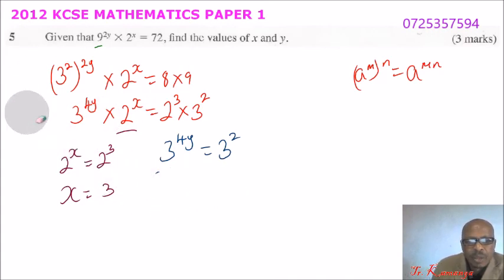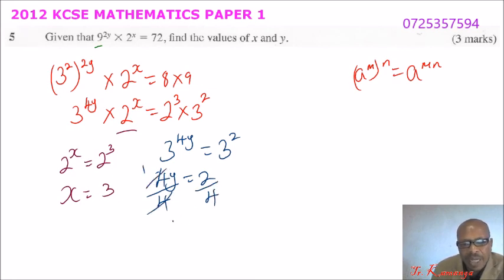Instead of dividing by 2, we divide by 4. So we say 4y equals 2. You divide by 4 here. You divide by 4 here. So that we are left with the y on one side. So that's 1. Y equals, you divide here you get 1, you divide here you get 2. So y equals a half.